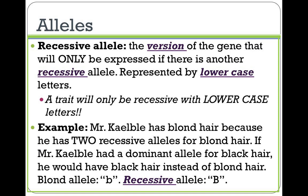On the other hand, a recessive allele is the version of that gene that will only be expressed with another recessive allele. These are represented by lowercase letters. So the way this works, there are two different letters together at a given time. For the recessive allele to be shown — for you to actually be able to see it — you need to have both letters as lowercase. If you have a capital letter, the dominant trait will always be shown. For example, Mr. Kelby has blonde hair because he has two recessive alleles for blonde hair — lowercase b, lowercase b. If Mr. Kelby had a dominant allele for black hair, he would have black hair instead of blonde hair.